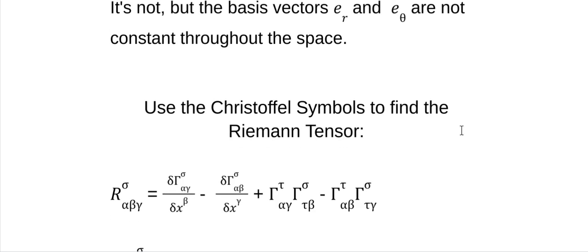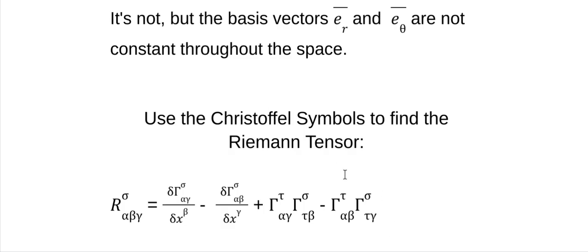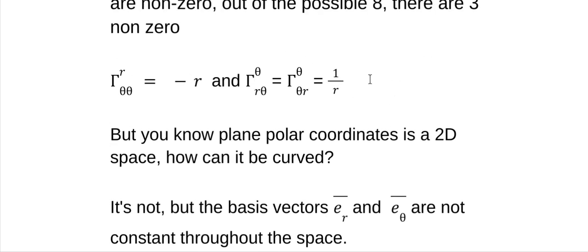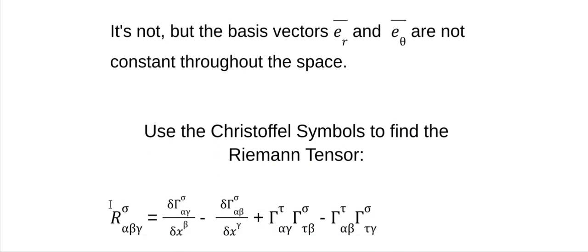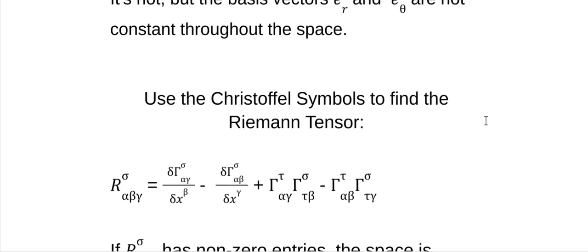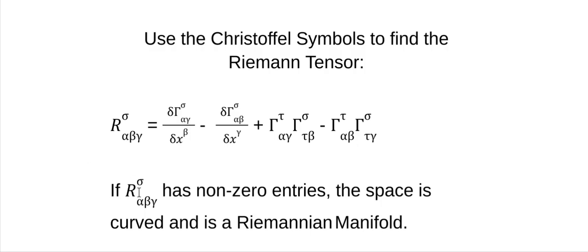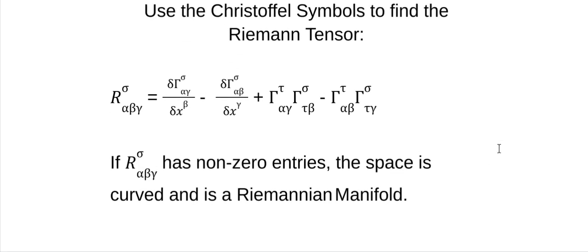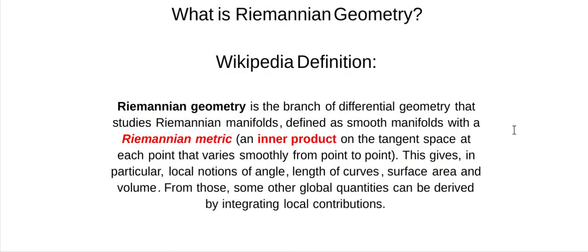The next step is to use the Christoffel symbols to find the Riemann tensor, which is given by this even more horrible equation. If I take those Christoffel symbols for plane polar coordinates and put them in this equation — and I've done that; it's painful and long — every element is zero. All elements of the Riemann tensor are zero. So plane polar coordinates are flat, and you knew that before you started — but I did it anyway because I'm stubborn. If the Riemann tensor has non-zero entries, the space is curved, and it is a Riemannian manifold — or pseudo-Riemannian if you want to be picky. Now I understand what this means: I'm working in a space where I can define a metric tensor. I hope that helped somebody. I'll see you later.